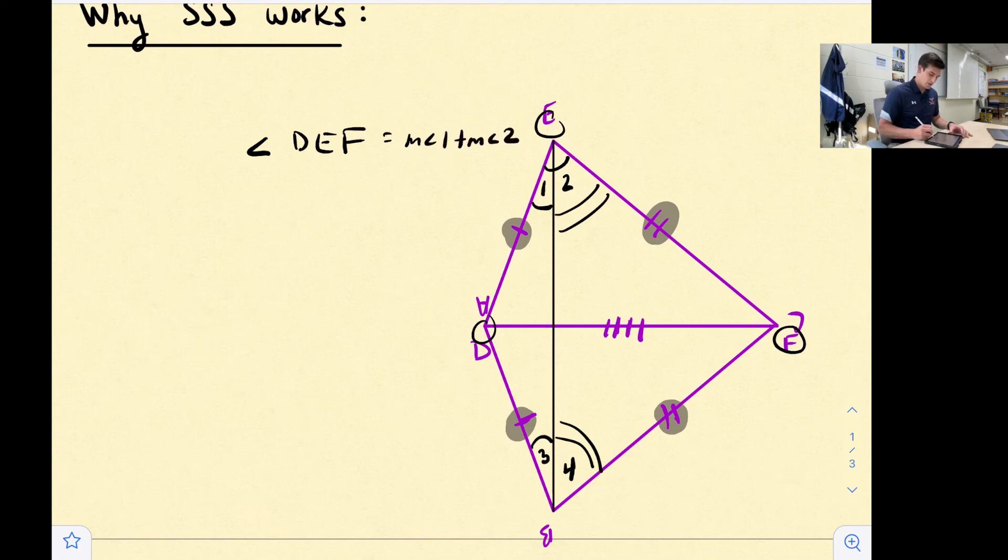Down here at the bottom, this entire angle, we'll call it angle DBF, is going to be equal to the measure of angle 3 plus the measure of angle 4. So now how is this beneficial to us? Well, if we can prove that these two angles, the larger angles here, if we can prove that they are congruent, then we can use the Side-Angle-Side congruence theorem to prove that these two triangles are congruent.